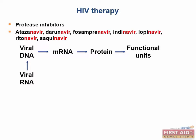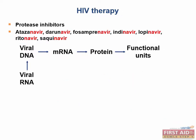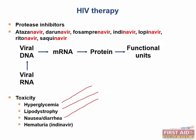An important protease inhibitor is ritonavir, which inhibits cytochrome P450 and as a result boosts the concentration of other HIV medications. So ritonavir can be given alongside other HIV medications to make them more effective. The side effects of these drugs include hyperglycemia, lipodystrophy, nausea and diarrhea, and specifically with indinavir, hematuria. You can think of protease inhibitors as 'increasers' — they increase glucose causing hyperglycemia, increase fat redistribution causing lipodystrophy, increase GI motility causing nausea and diarrhea, and increase blood in the urine.